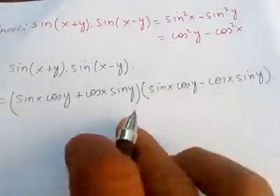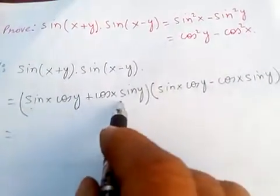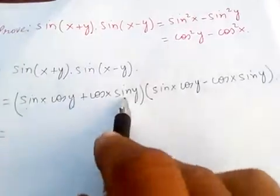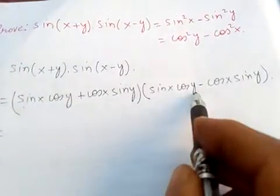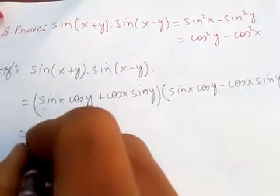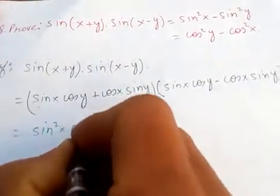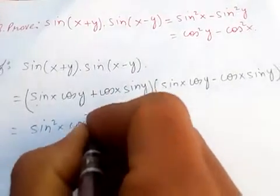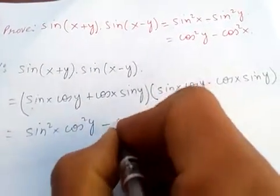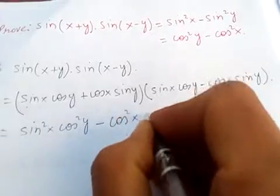Now if you see this — let's say this is a and this is b — so we have a plus b times a minus b, which is a squared minus b squared.